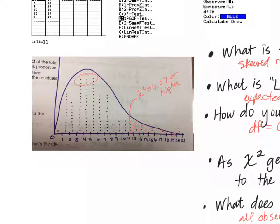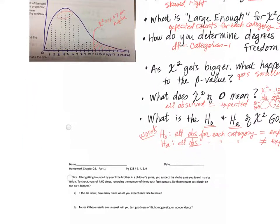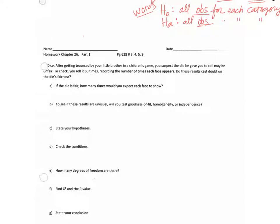One thing we missed doing yesterday is learning how to find the chi-squared value and the goodness of fit information — all the p-values — in the calculator. I'm going to be showing you that today. Your homework is pages 5 through 9, but I'm going to do all of page 5 with you and part of page 7 with you. Note: goodness of fit is not on a TI-83, so if you have a TI-83 calculator, you do not have goodness of fit.